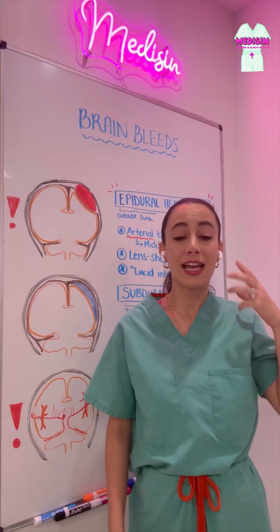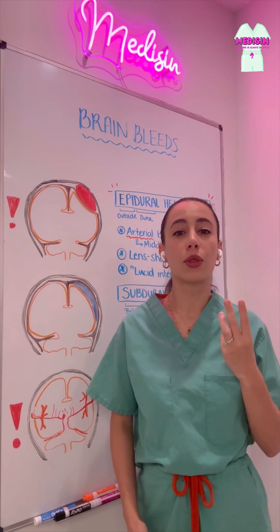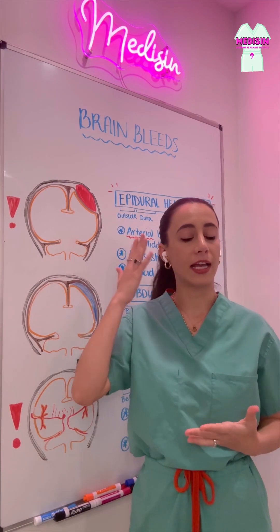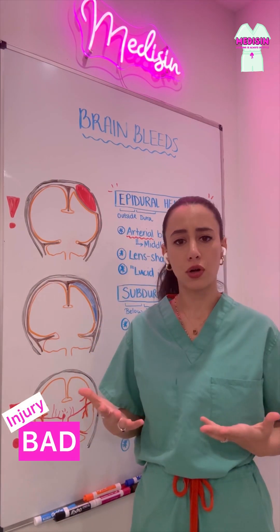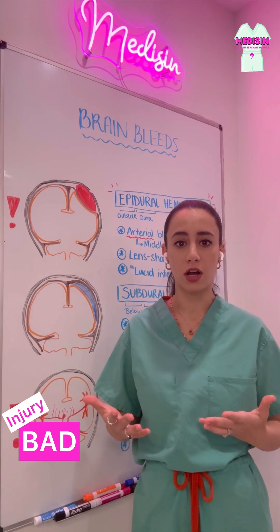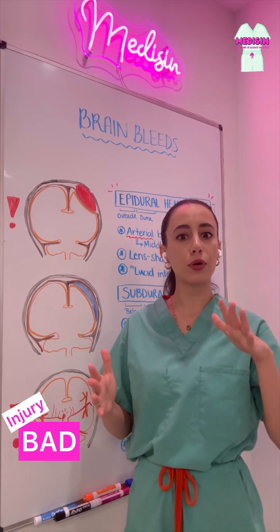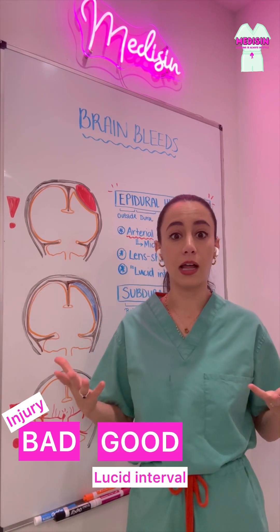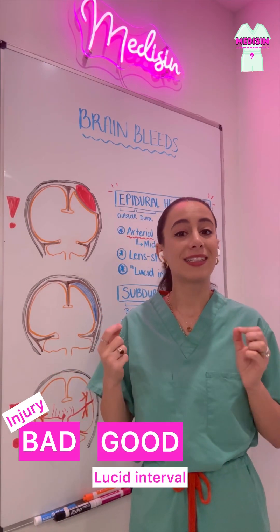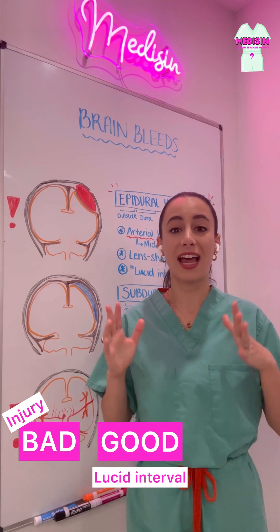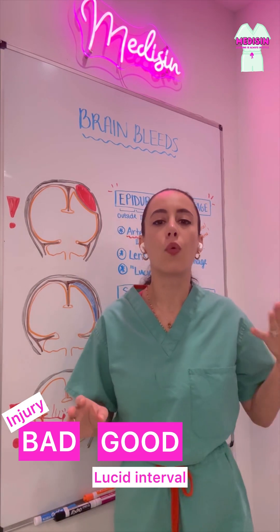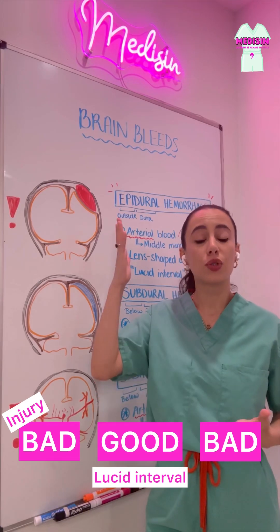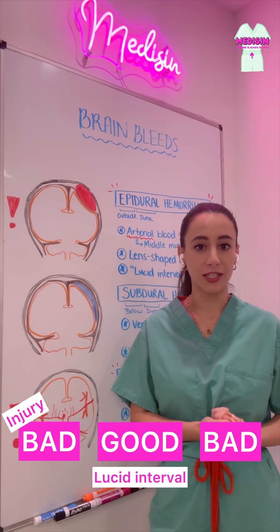When this happens to someone, symptoms can generally range in a three-phase cycle. Classically, the person will get hit on the head and start having major neurological deficits and even loss of consciousness. Over time, they will improve and have this classic lucid interval, where everything's fine and they feel a lot better. But the telltale sign of an epidural hemorrhage is that after this lucid interval, they get worse again. So this bad, good, bad sequence of symptoms is really associated with epidural hemorrhages.